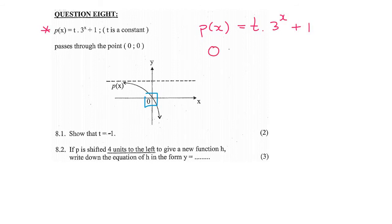So you just go plug that in, 0 like that, and so 0 is equal to t. Now 3 to the power of 0 is 1, and so 0 is equal to t plus 1. If you had to solve, t would be equal to negative 1. So that was quite easy.